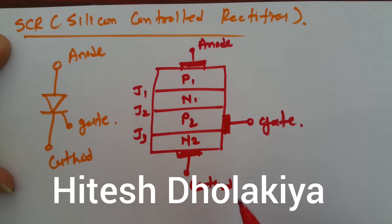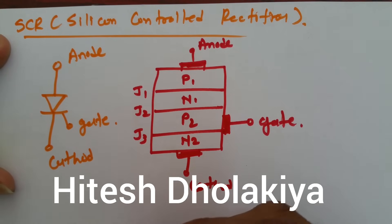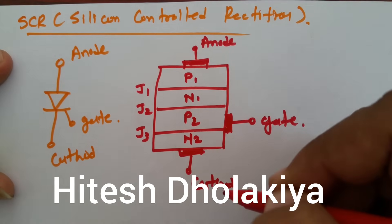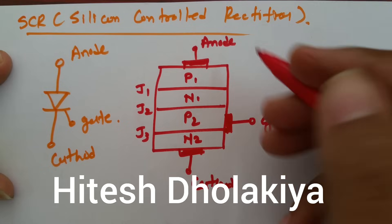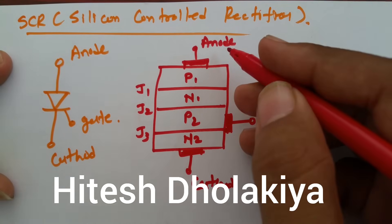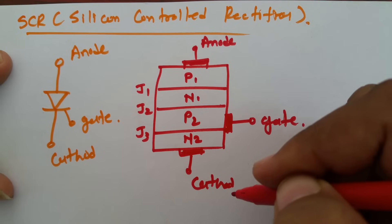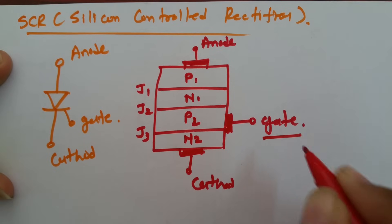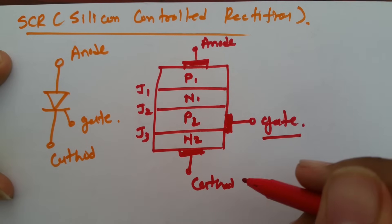To understand how this device is functioning, we need to understand how to provide biasing to this SCR. When the anode is positive with respect to cathode, SCR will be in forward bias. When the anode is negative with respect to cathode, SCR will be in reverse bias. This gate terminal controls the current flowing through anode to cathode during forward bias.